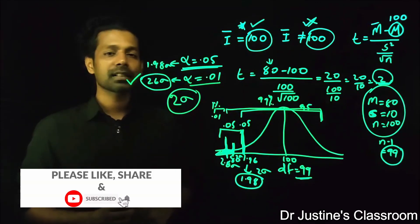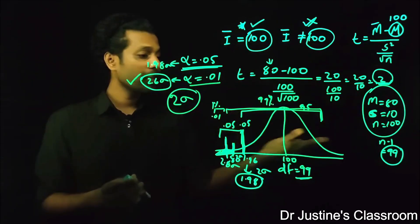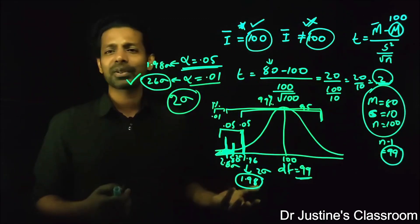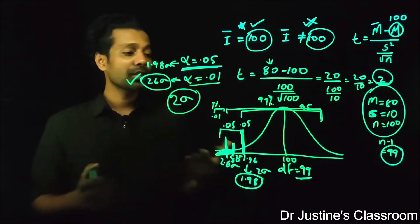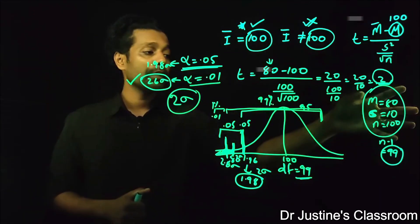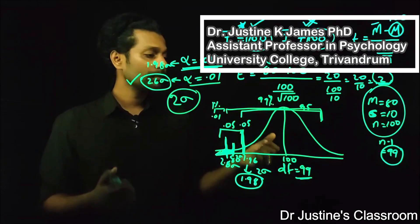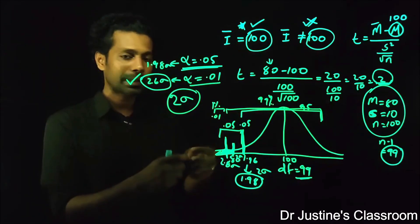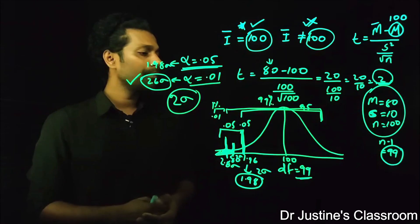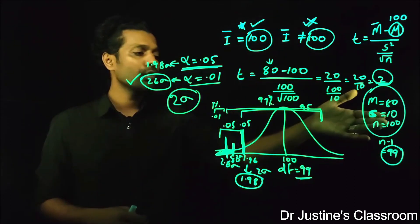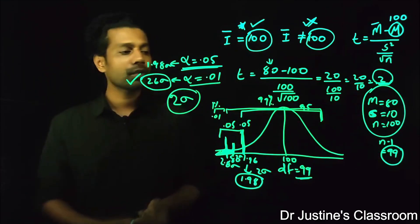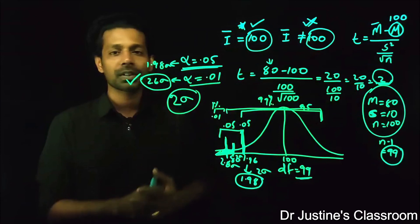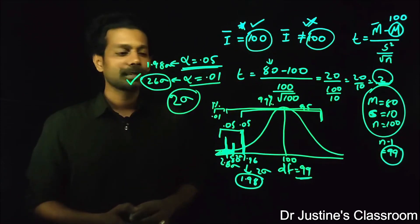The degree of freedom is n minus 1. A likely exam question is about comparing a sample to a population and identifying which test to use. The assumptions of this test: it is a parametric test, the sample has to be normally distributed, the data has to be independent — every observation must be independent of each other — and there shouldn't be any extreme values in the data. These are the major assumptions of the one-sample t-test: comparing the mean of the sample to the mean of the population.